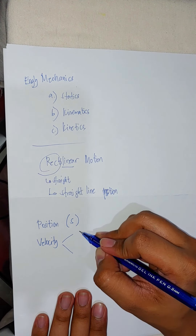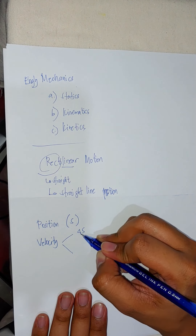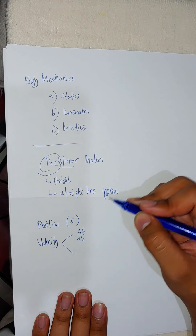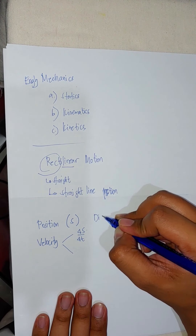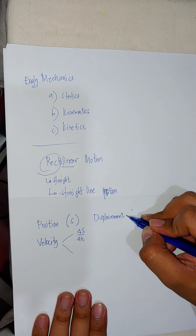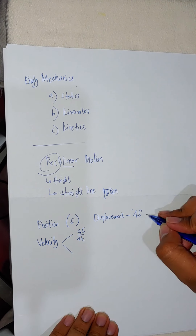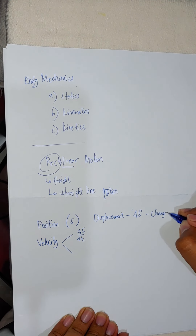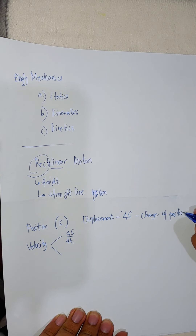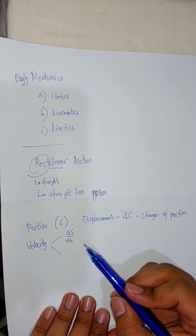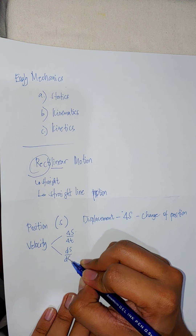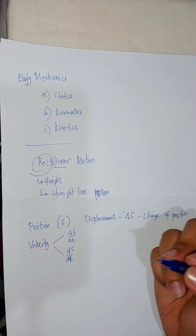We also talked about velocity. We have the average velocity, which is the change of position over the change of time. The change of position is called displacement, denoted by delta s. So velocity is the change of position over time, and the instantaneous velocity is the derivative of position with respect to time.